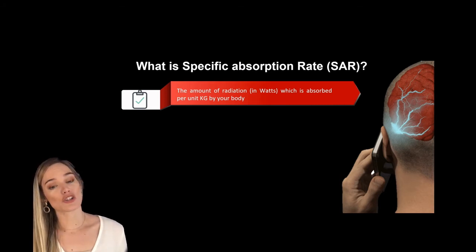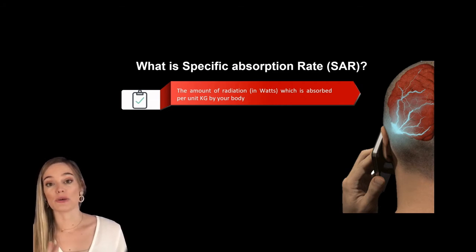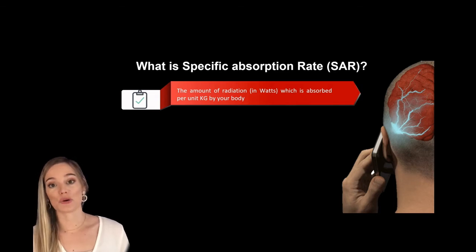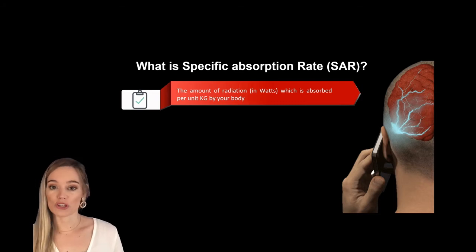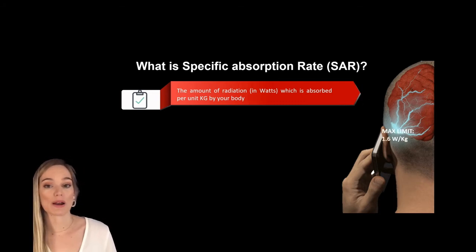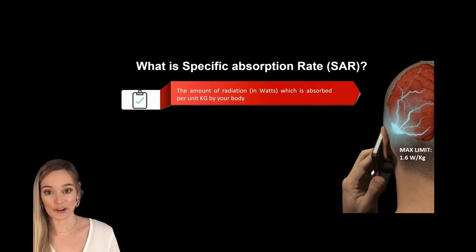Your hearing aids are class 2 medical devices, which means they have to comply to the FDA regulations, to the medical device directive regulations, and to your radio equipment directive regulations. All of which require the SAR rate to be below 1.6 watts per kilogram.